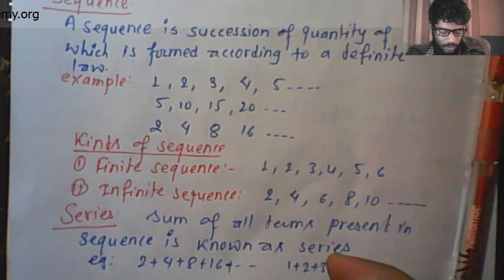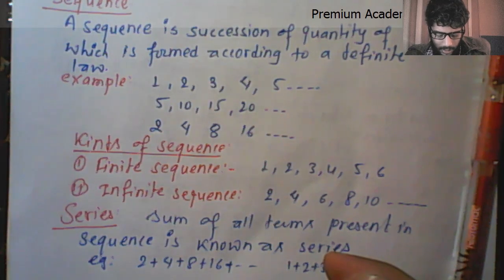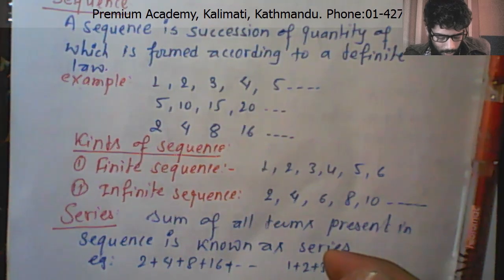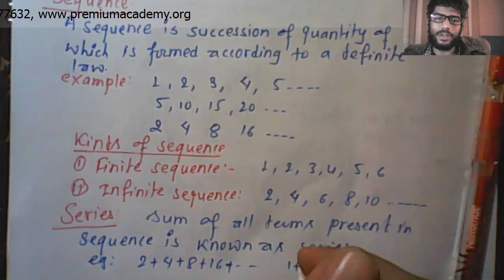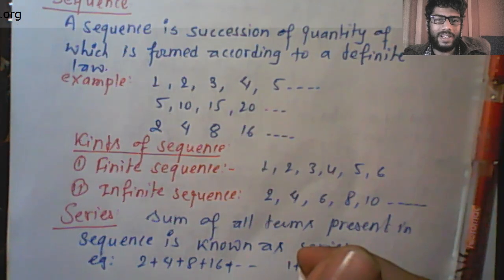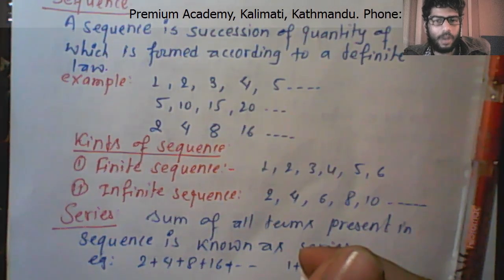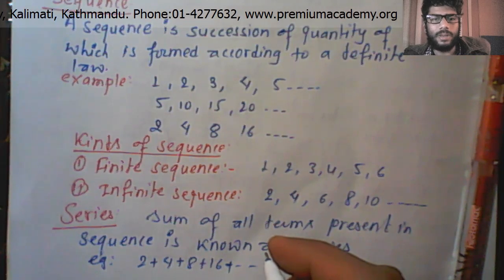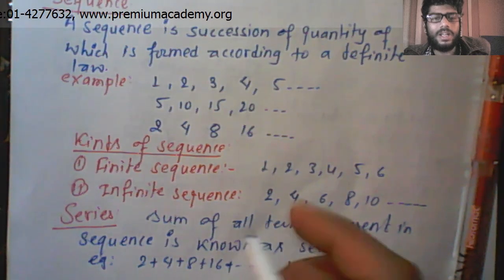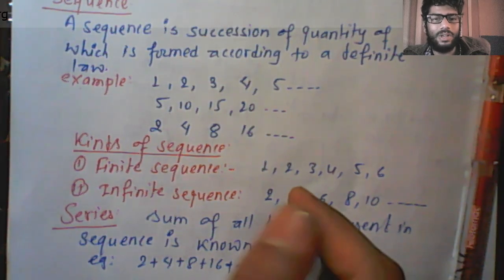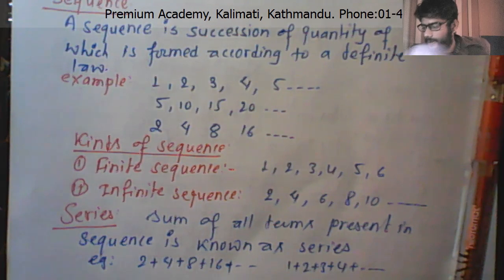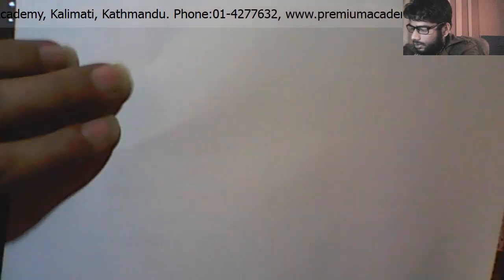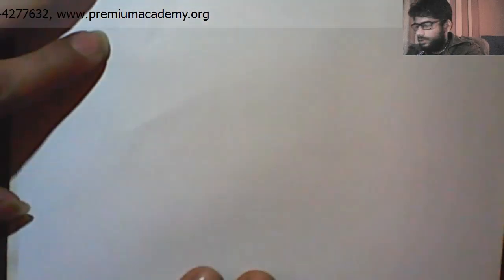Now we will do the progression. Progression means a sequence of numbers which is said to be a progression when the difference or ratio of any term and its preceding term is constant. So this is the progression.